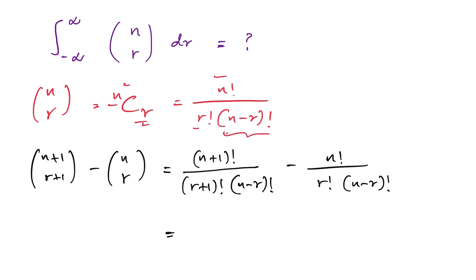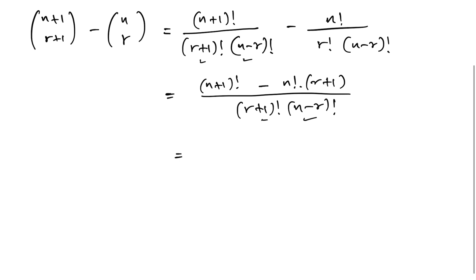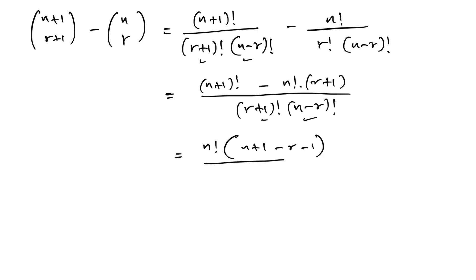Taking a common denominator of (r+1)! times (n-r)!, we have (n+1)! times 1 minus n! times (r+1), all over that denominator. We can write (n+1)! as n! times (n+1), then factor out n!, giving n+1 minus (r+1) in the numerator.